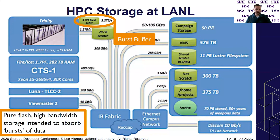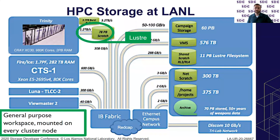The demands on burst buffer are significant in terms of bandwidth. Down a tier below that is our scratch file space, provided by the Lustre parallel file system. This can be thought of as the workspace for cluster jobs — it is mounted on every node of the compute cluster and provides the general purpose area where jobs can store data, interact with data, and perform updates on it.